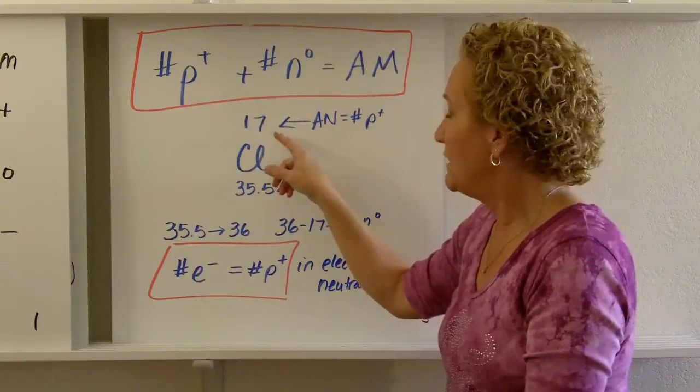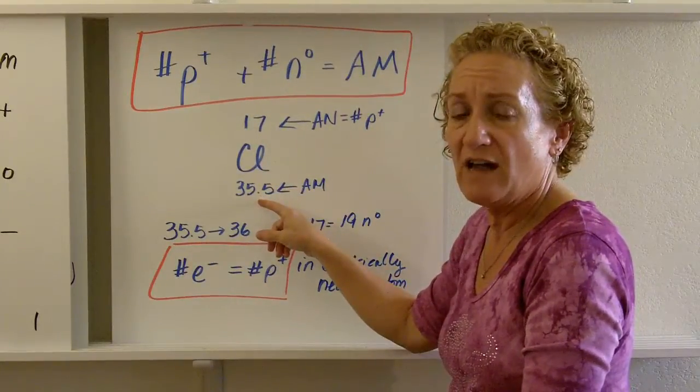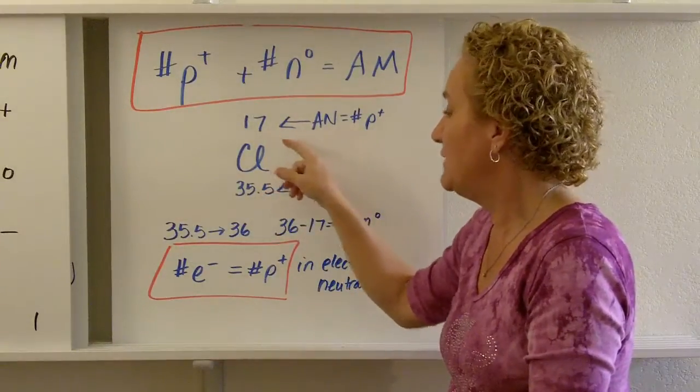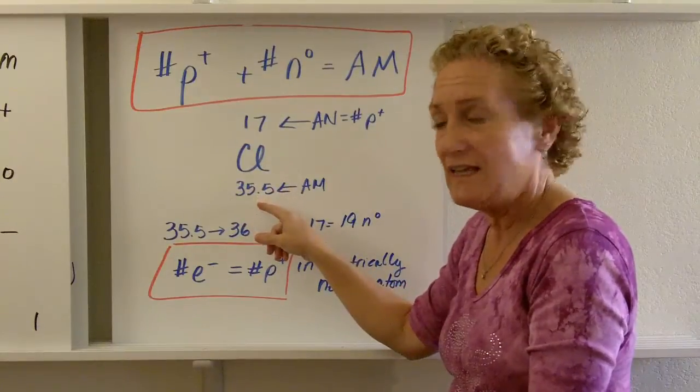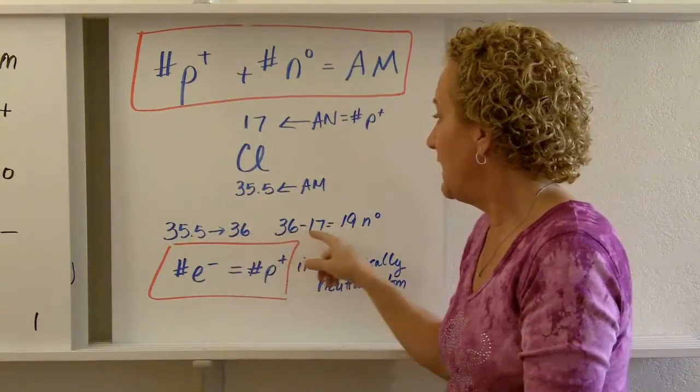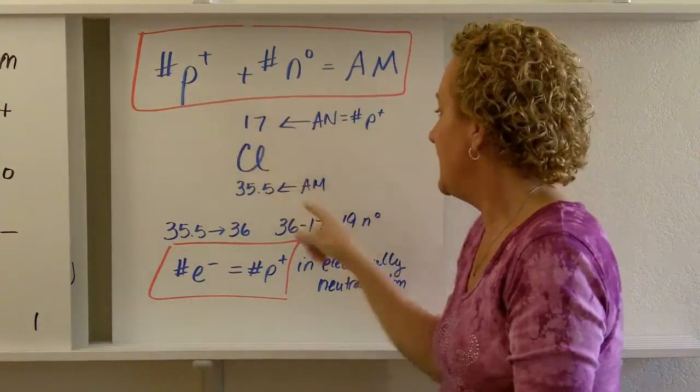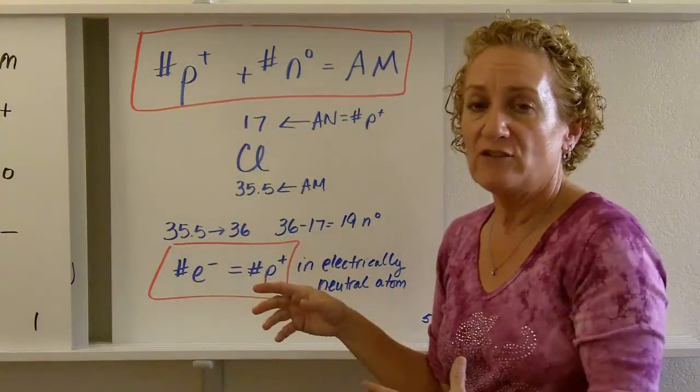In the case of chlorine, you have an atomic number of 17 and an atomic mass of 35.5. The whole number is the number of protons, so you know that there are 17 protons. This we're going to round to 36. 36 minus 17 is going to tell us there's 19 neutrons.